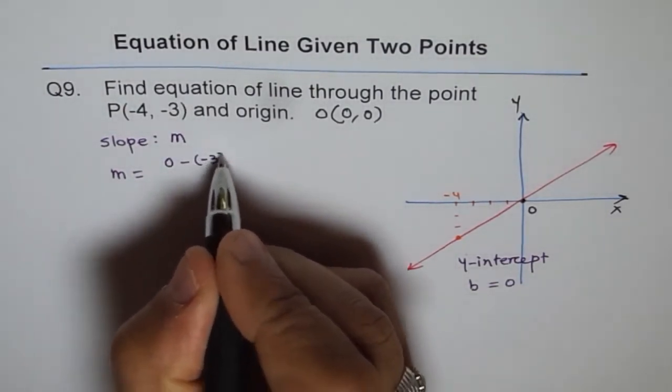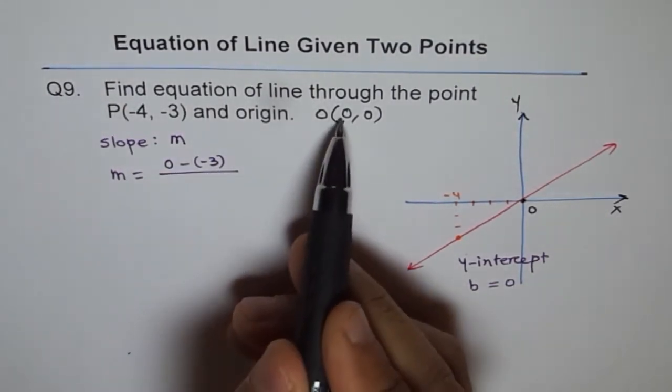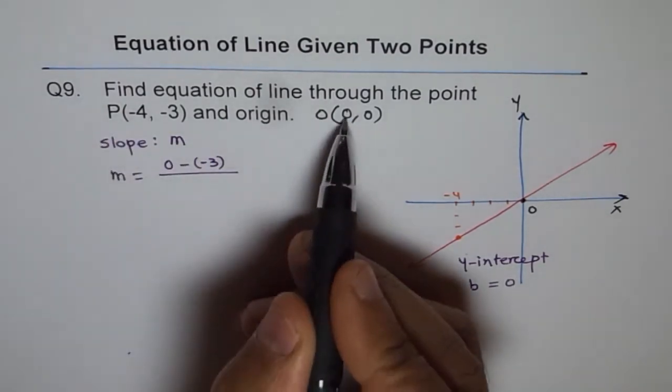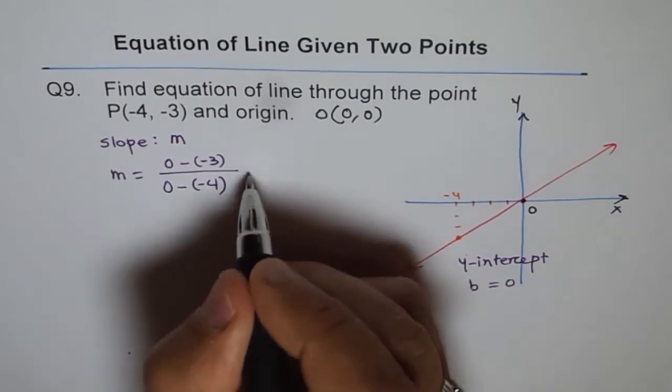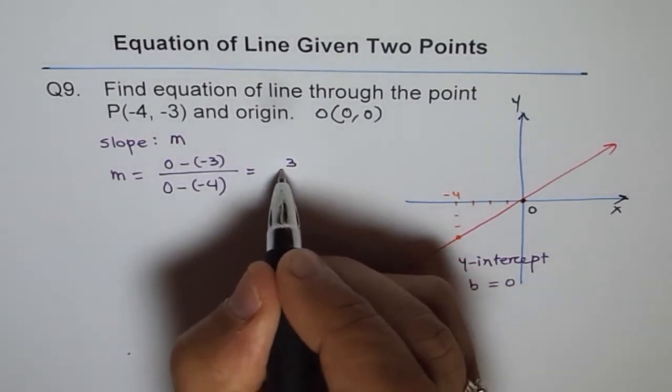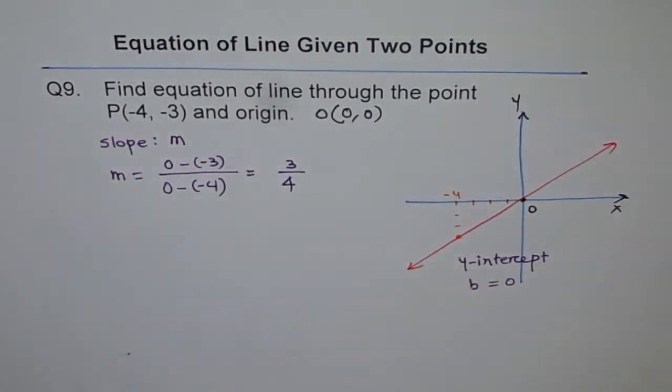So Y2 minus Y1. That means 0 minus (-3), divided by X2 minus X1, 0 minus (-4). That gives me 3 over 4. So that is the slope.